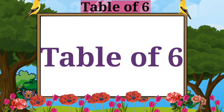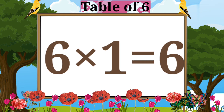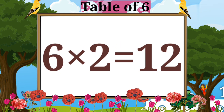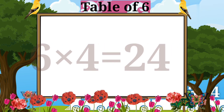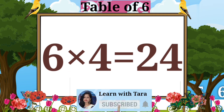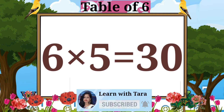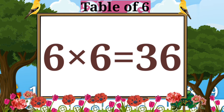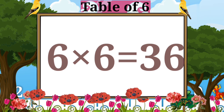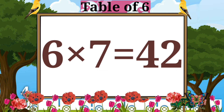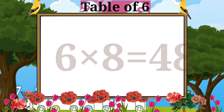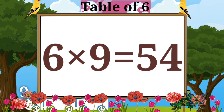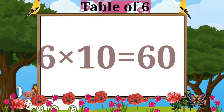Table of six. Six ones are six. Six twos are twelve. Six threes are eighteen. Six fours are twenty-four. Six fives are thirty. Six sixes are thirty-six. Six sevens are forty-two. Six eights are forty-eight. Six nines are fifty-four. Six tens are sixty.